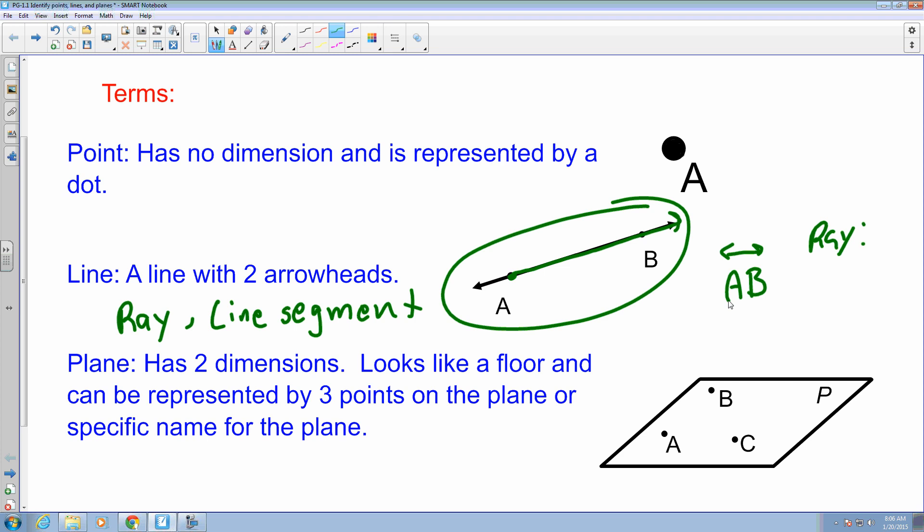In this instance, it would be Ray AB, and we would make sure that the arrow is going towards the direction that is going on the ray.